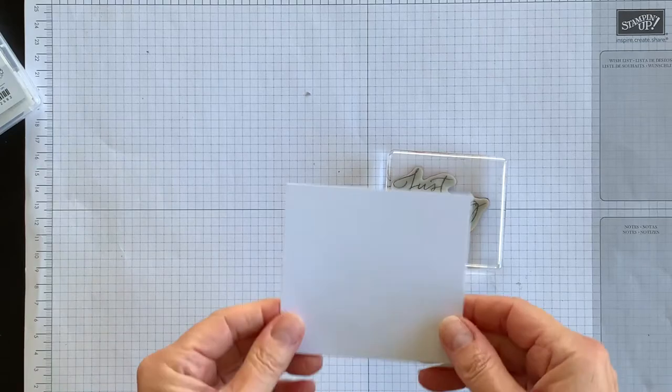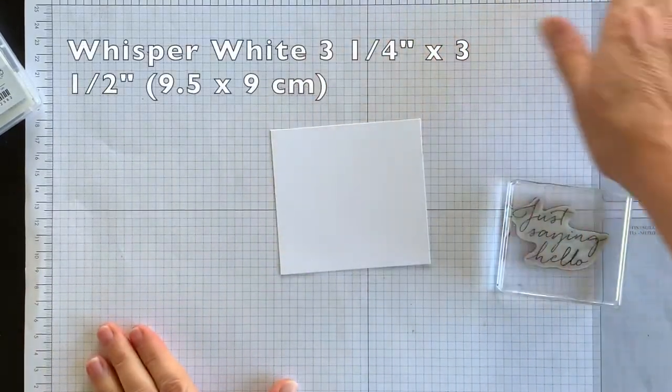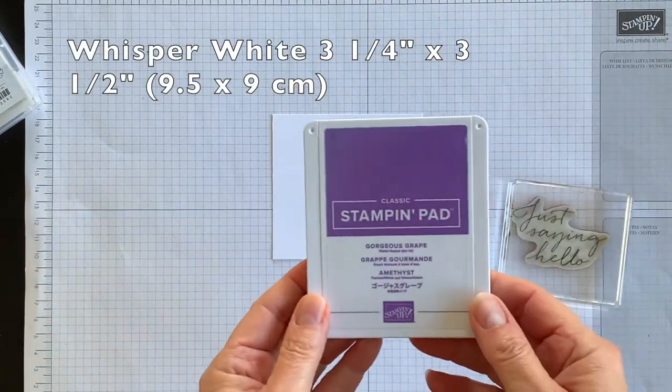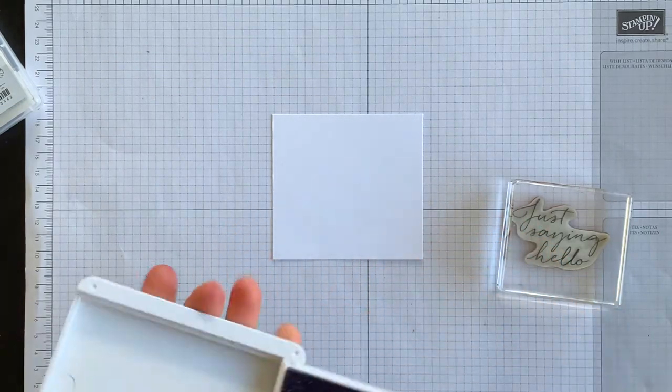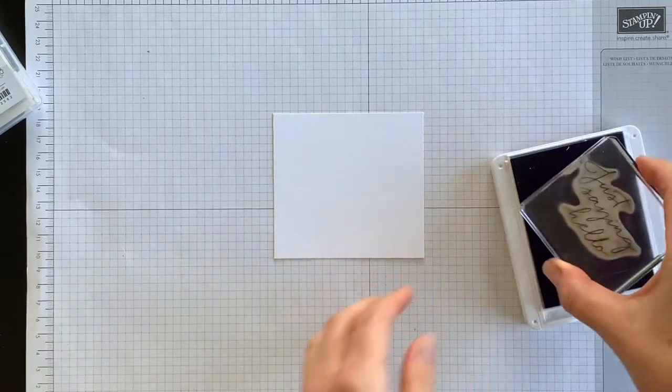I have a piece of scrap Whisper White cardstock and I'm going to use my Gorgeous Grape ink pad to ink up the phrase and stamp it down.